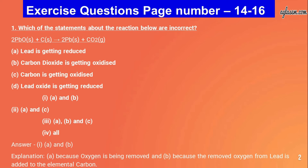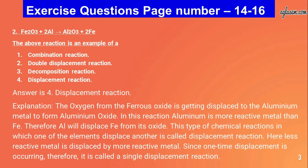Question number two: Fe₂O₃ + 2Al → Al₂O₃ + 2Fe. The above reaction is an example of: combination reaction, double displacement reaction, decomposition reaction, or displacement reaction. The answer is displacement reaction. The oxygen from ferrous oxide is displaced to aluminium metal to form aluminium oxide. Aluminium is more reactive than iron, so Al displaces Fe from its oxide. Since one single displacement occurs, it is called a single displacement reaction.